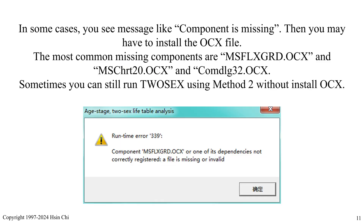In some cases, you see a message like 'component is missing.' Then you may have to install the OCX file. The most common missing components are msflxgrd.ocx, mshrd20.ocx, or comdlg32.ocx. Sometimes you can still run 2-Sex using method 2 without installing OCX.